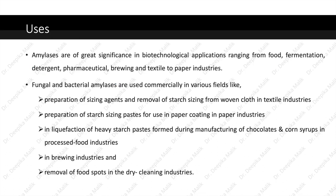Now let us see some uses of amylases. Amylases are of great significance in biotechnological applications ranging from food, fermentation, detergent, pharmaceutical, brewing and textile to paper industries. Fungal and bacterial amylases are used commercially for preparation of sizing agents and removal of starch sizing from woven cloth in textile industries. In textiles, starch is used to stiffen fabrics such as shirt collars and cuffs while sizing is used to add body and crispness to garments. Amylases are also used in preparation of starch sizing pastes for paper coating, in liquefaction of heavy starch paste during manufacturing of chocolates and corn syrups, and for removal of food spots in dry cleaning industries.